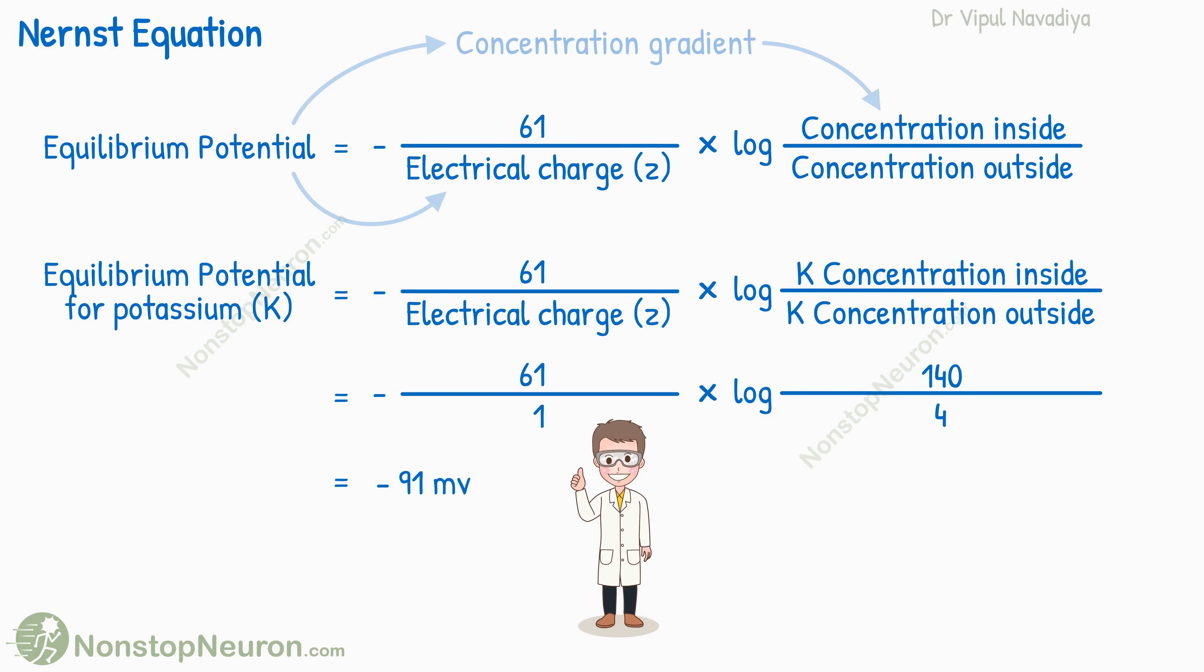The guy who discovered all this was Walther Nernst, so this equation is called the Nernst equation. And the equilibrium potential is also called Nernst potential. Thus, Nernst made finding equilibrium potential for individual ions simple.